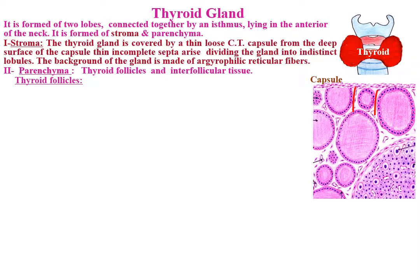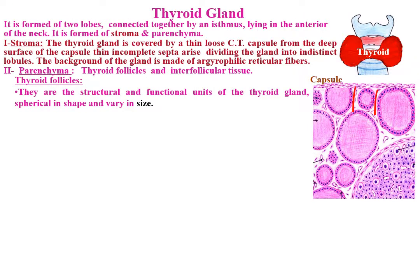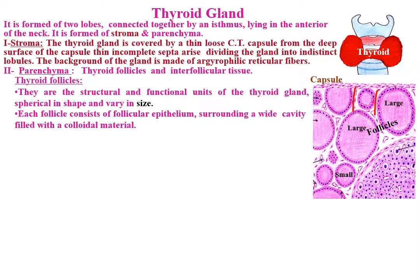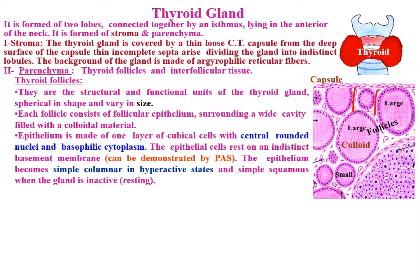Parenchyma is formed of thyroid follicles and interfollicular tissue. Thyroid follicles are the structural and functional units of the thyroid gland, spherical in shape and vary in size. Each follicle consists of follicular epithelium surrounding a cavity filled with a colloidal material. The epithelium is made of one layer of cuboidal cells with central rounded nuclei and basophilic cytoplasm, resting on an indistinct basement membrane demonstrable by periodic acid-Schiff reaction.